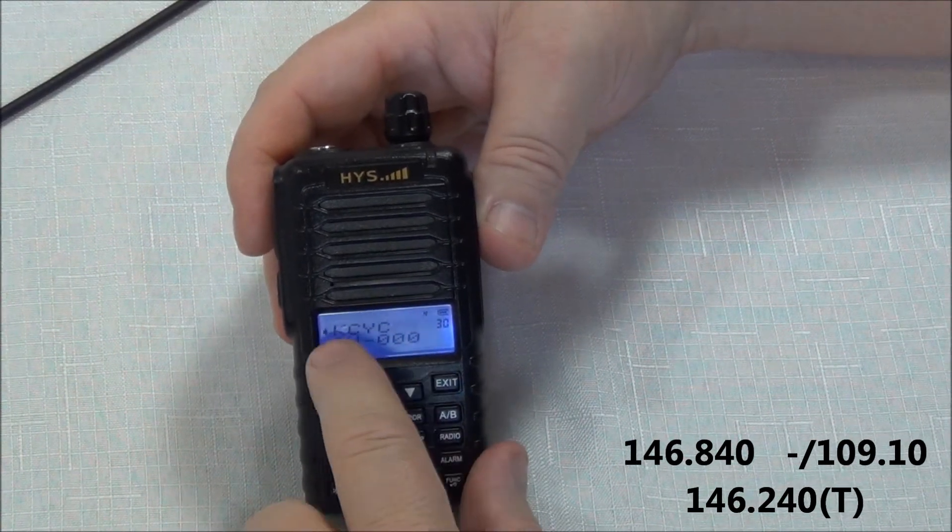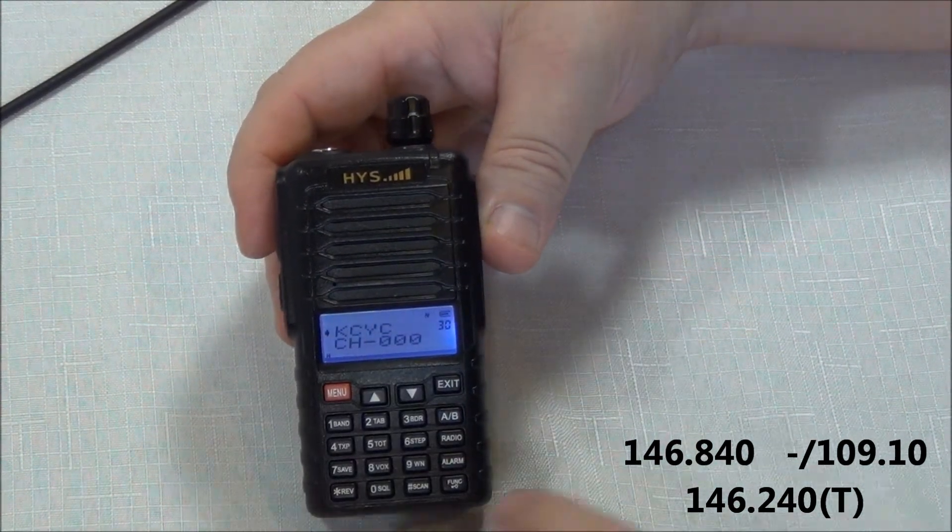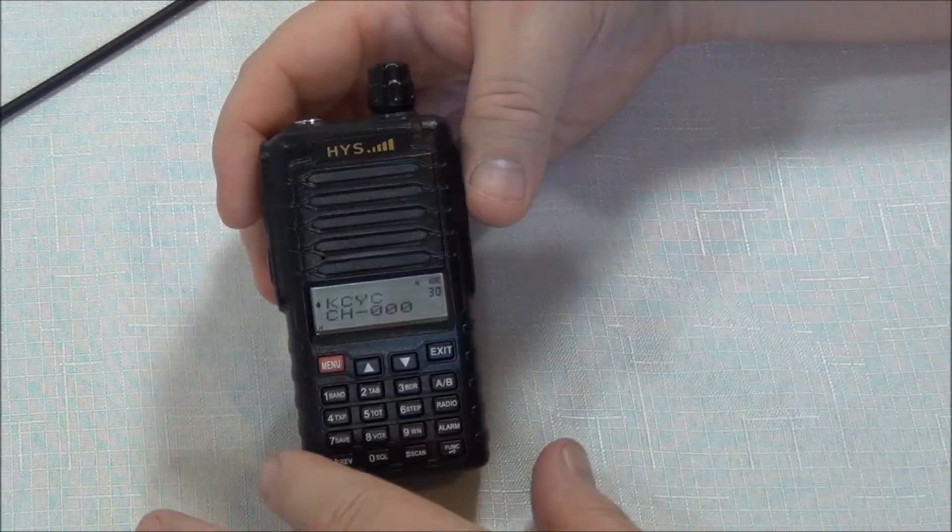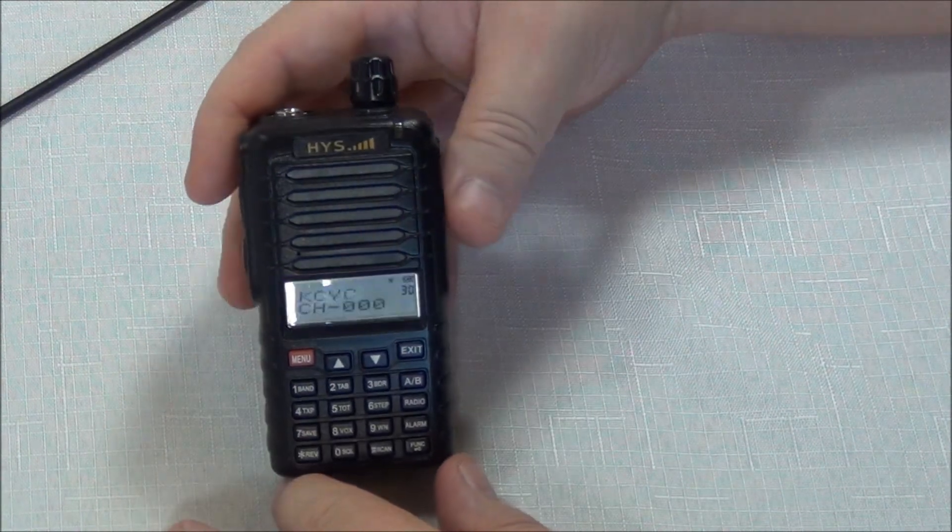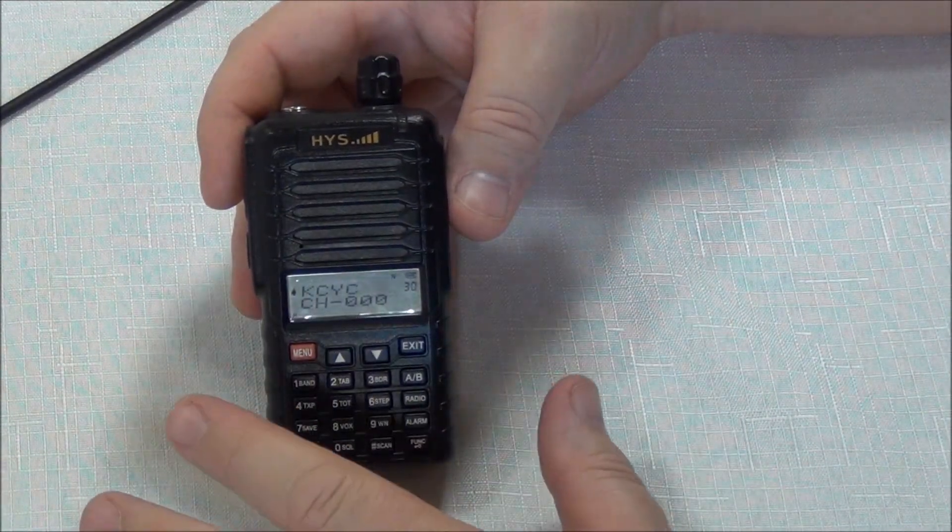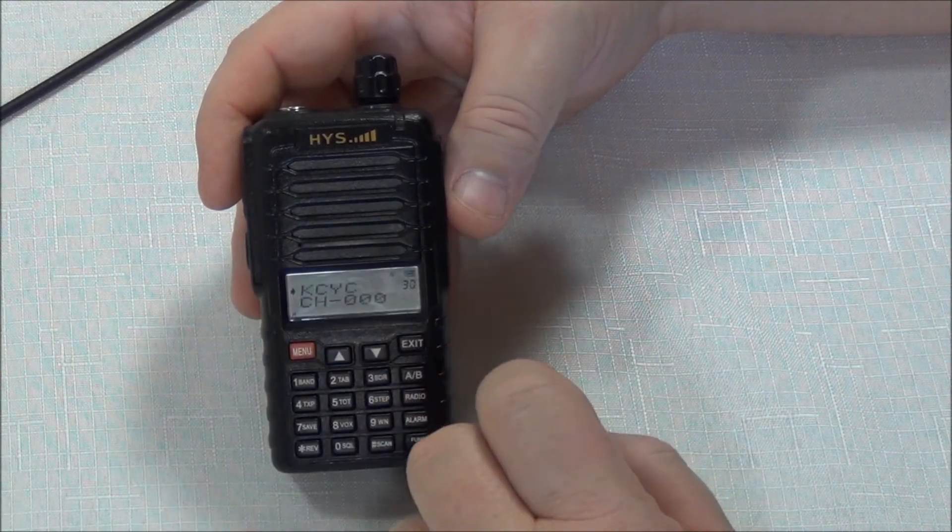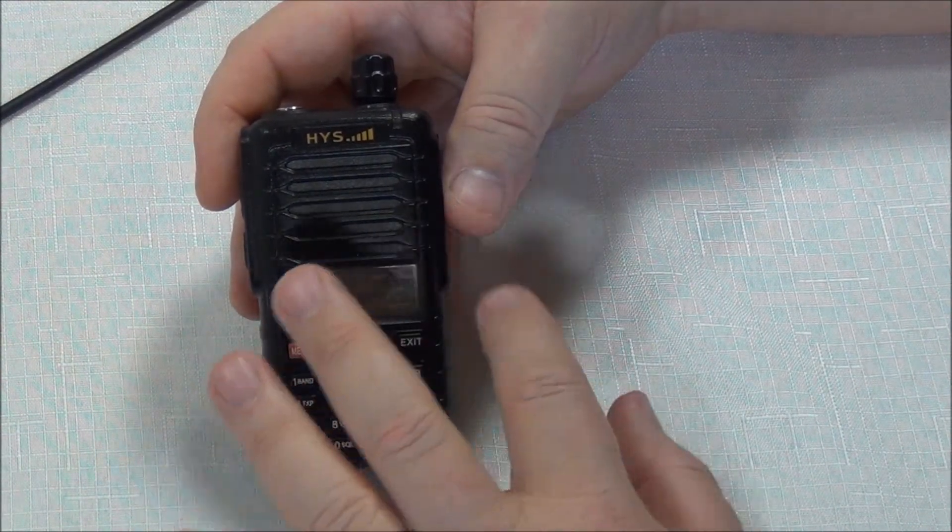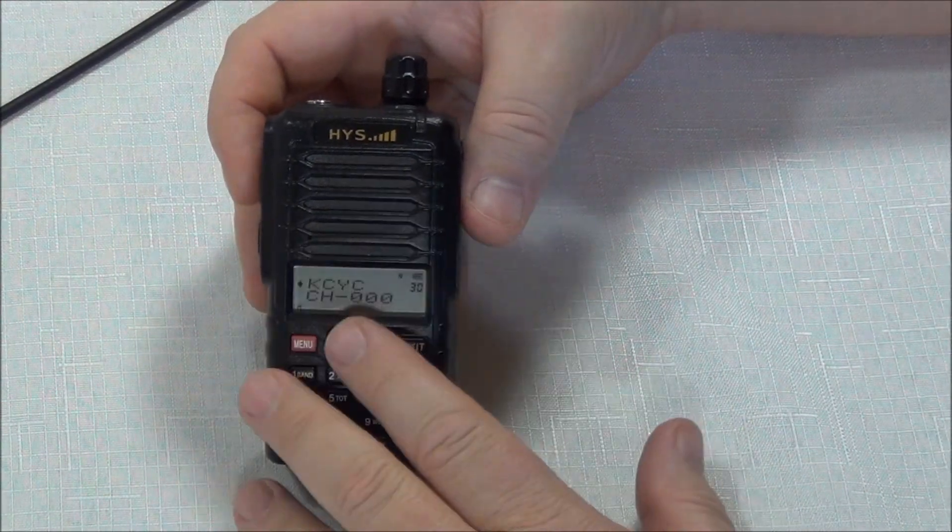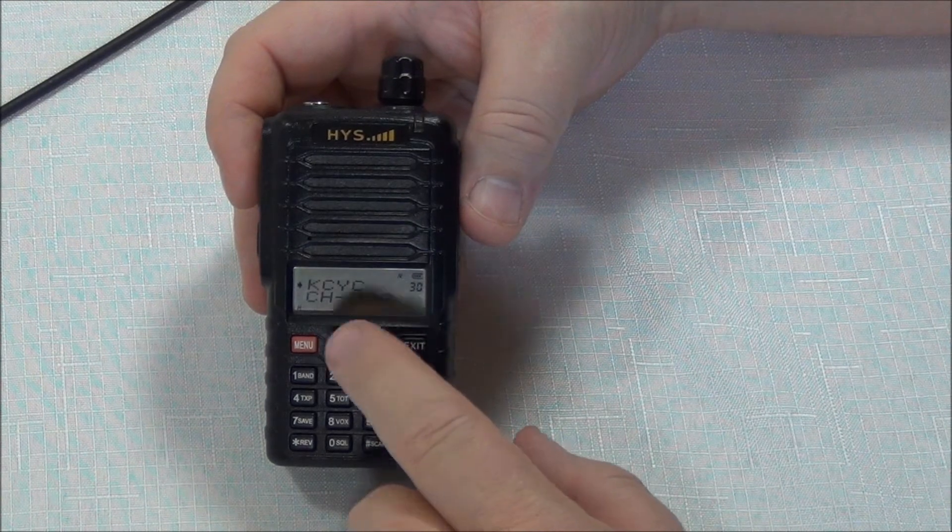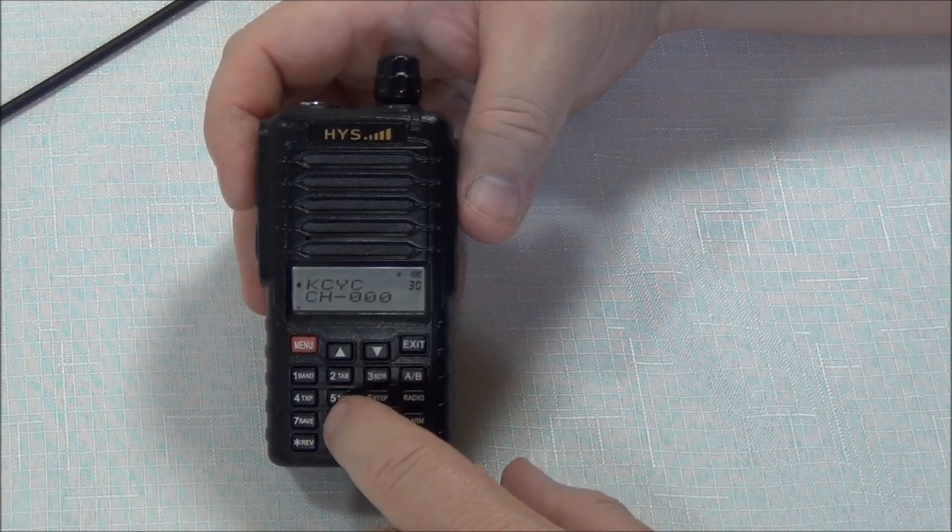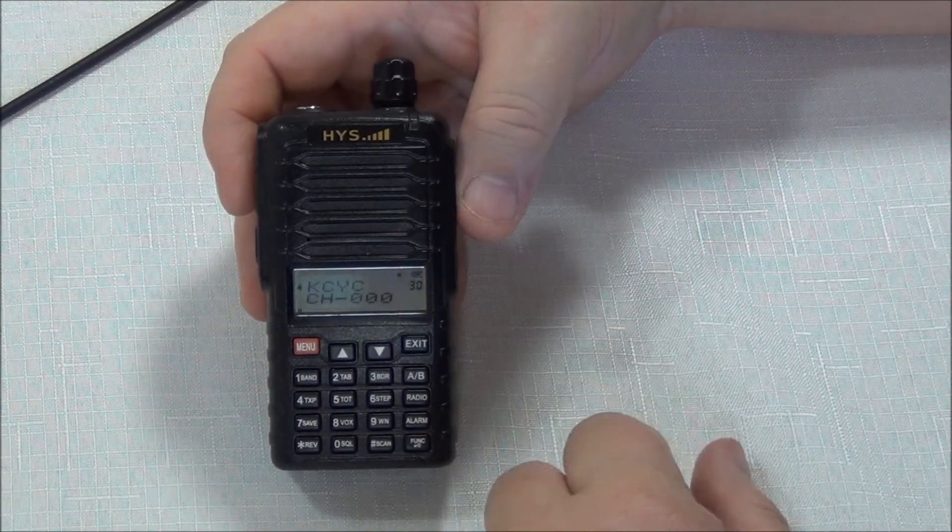Now to save these names you will need to use the programming software. And all of the steps that we just went through manually programming these in, using the programming software is a snap. I mean it takes literally just a few seconds. It's like entering some information into a spreadsheet and you're done. And that will be the next video that I post is how to program this using the supplied computer software. That's it for now and thanks for watching.